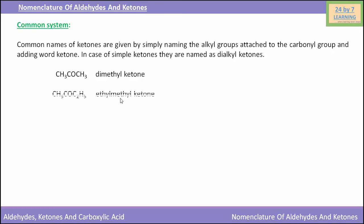Another example of ketone nomenclature in the common system is CH3COC2H5, which is named as ethyl methyl ketone, because it contains one ethyl group, one methyl group, and one keto group. That is why it is called ethyl methyl ketone.